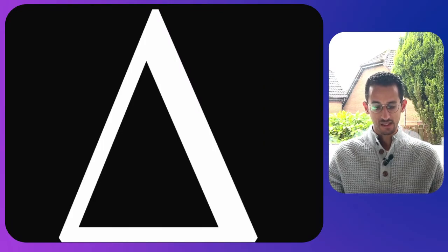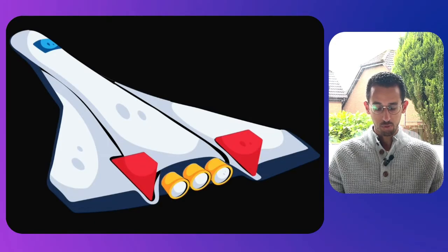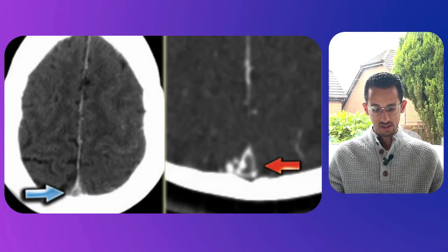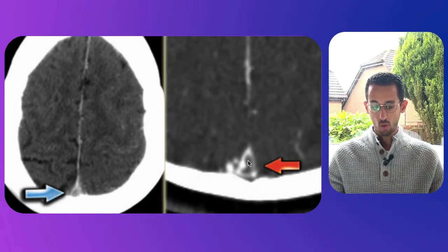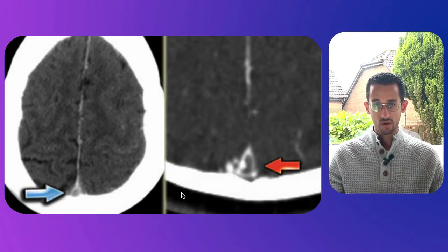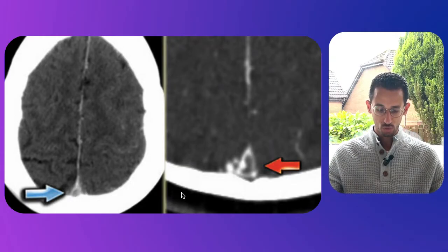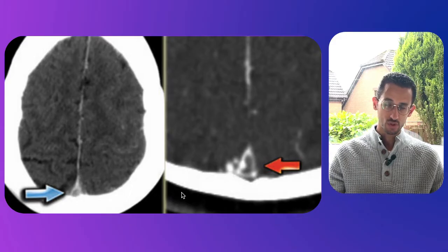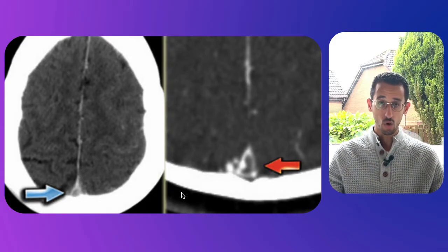Moving to the next one — this is a delta sign, and the delta sign represents thrombosis on contrast CT scan. It resembles a delta-shaped supersonic airplane. Looking at this picture, this is the empty delta sign — it looks like a triangle with an empty space inside. The rationale is enhancement from the outside with a low-attenuating center within the thrombosis. This enhancement is due to the rich dural venous collateral supply around the thrombosed sinus, which produces this central low attenuation on the CT scan.